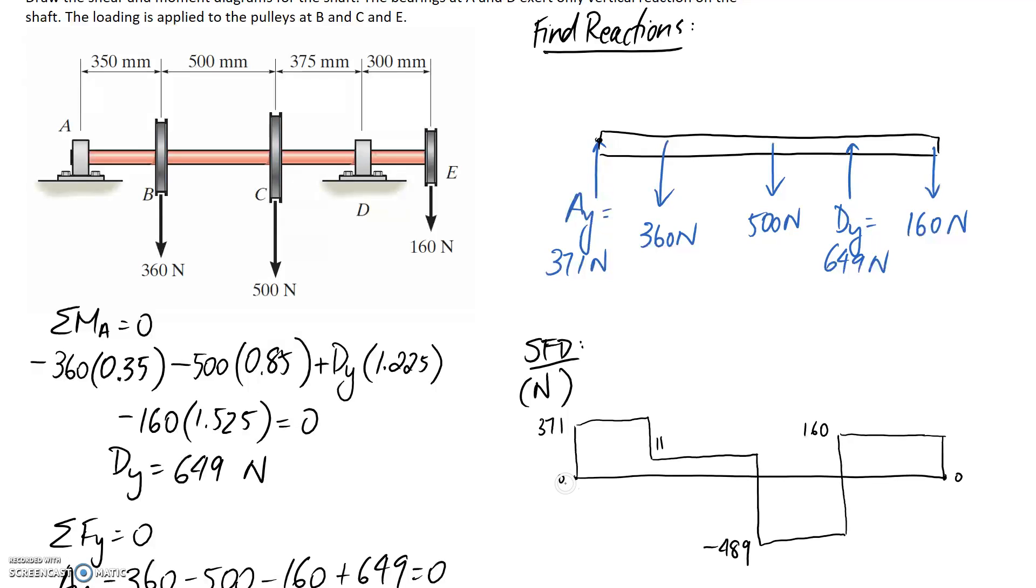Again there's nothing happening through this section so we remain straight until we need to be taken down 160. So 160 minus 160 takes us back to zero. You can see that we've started and ended at zero on our shear force diagram, which is a good sign that it's going to be correct.